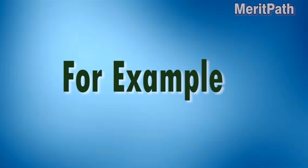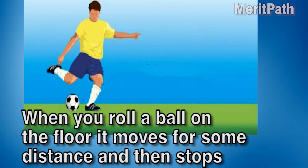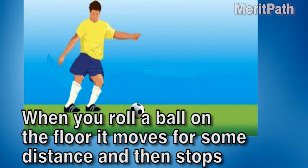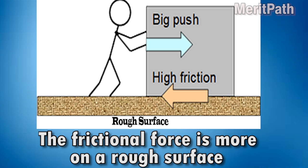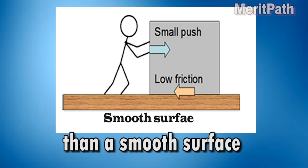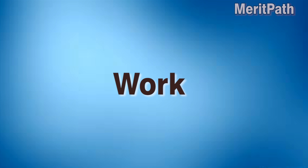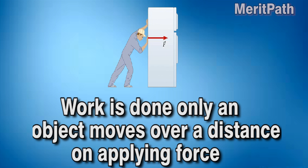Frictional force is a force that acts in an opposite direction to the movement. For example, when you roll a ball on the floor it moves for some distance and then stops. This is due to frictional force. Frictional force is more on a rough surface than a smooth surface.